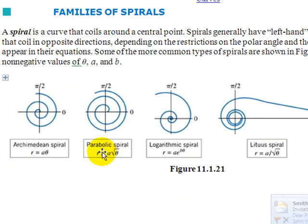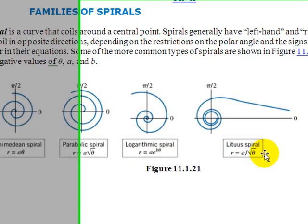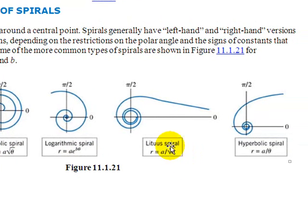There's what they call a parabolic spiral, R equals A times the square root of θ, and the logarithmic spiral, R equals A times e to the Bθ. There's the Lituus spiral, which is kind of strange because at one point it just kind of flattens out. And that's R equals A divided by the square root of θ, and the hyperbolic spiral, R equals A over θ.